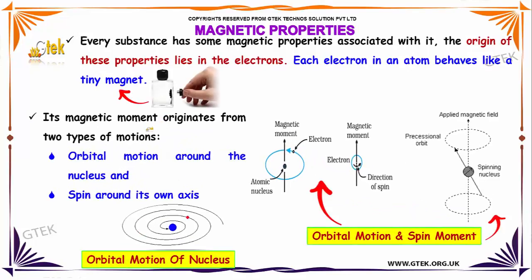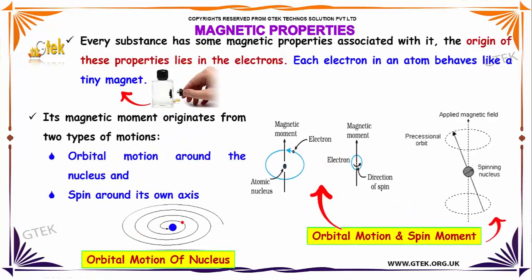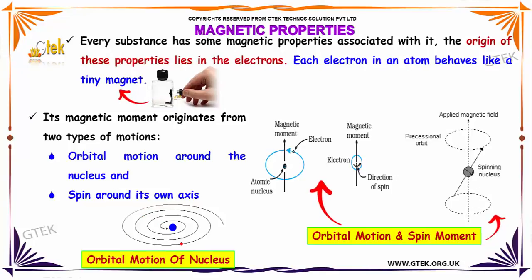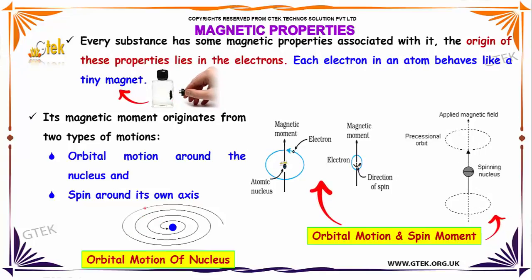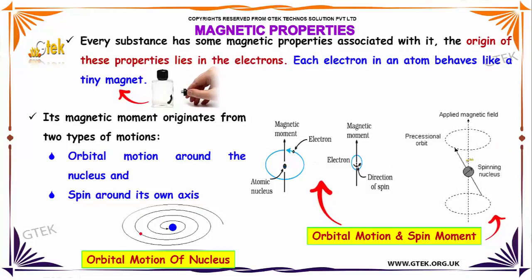Magnetic Properties. Every substance has some magnetic properties associated with it. The origin of these properties lies in the electrons. Each electron in an atom behaves like a tiny magnet.